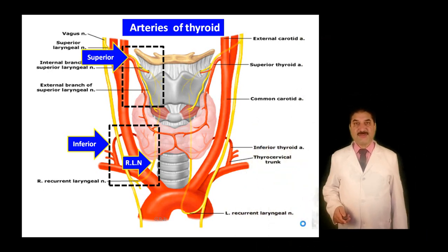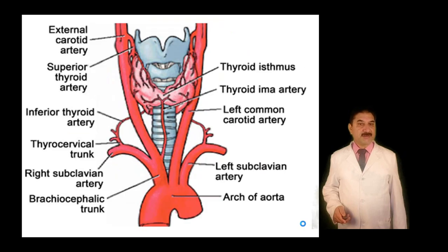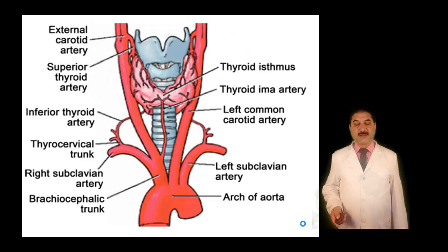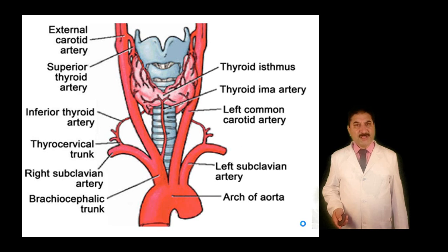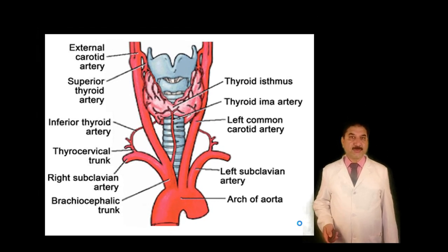The third vessel that occasionally supplies the thyroid is called the thyroid ima artery — IMA means unpaired. It arises from the brachiocephalic trunk. It is commonly associated with Down syndrome and other chromosomal abnormalities.